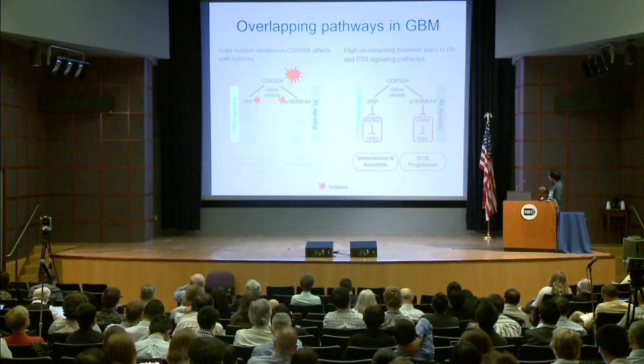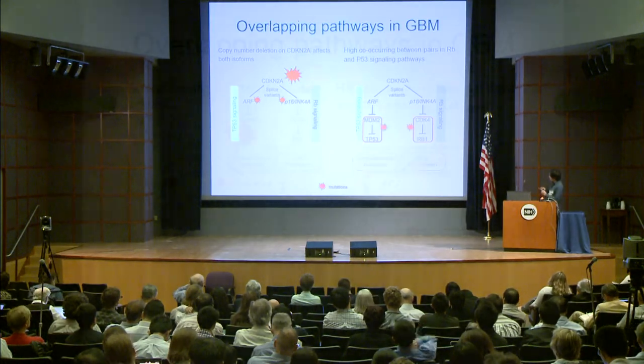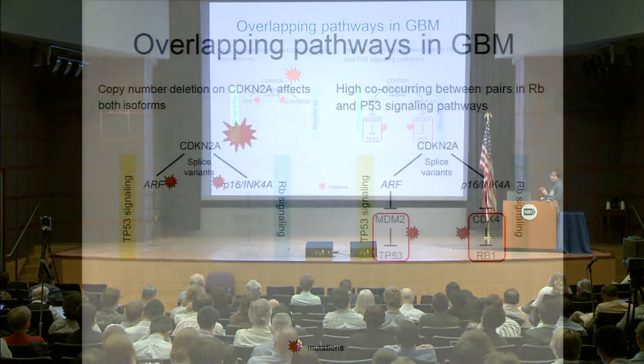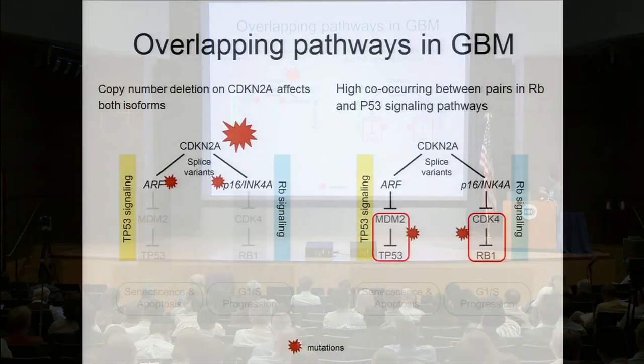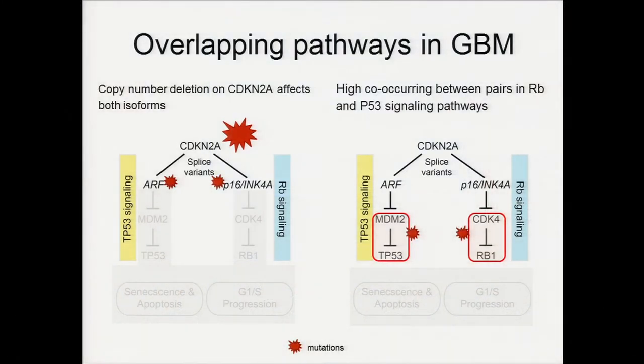One interesting observation is that CDKN2A here is a deletion, and the co-occurrence between the pairs is much stronger than any individual gene co-occurrence. This suggests the copy number deletion on CDKN2A affects both isoforms and results in alteration of both signaling pathways.